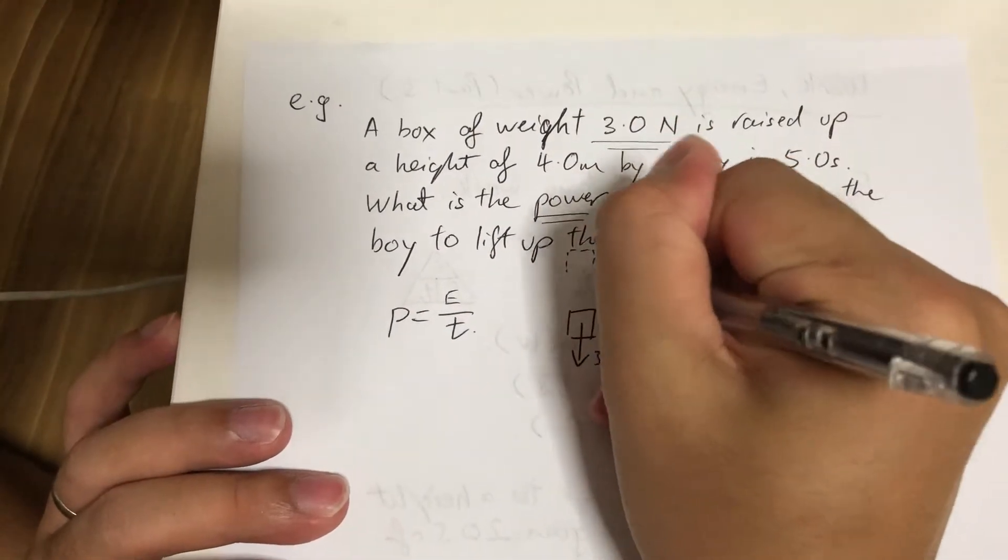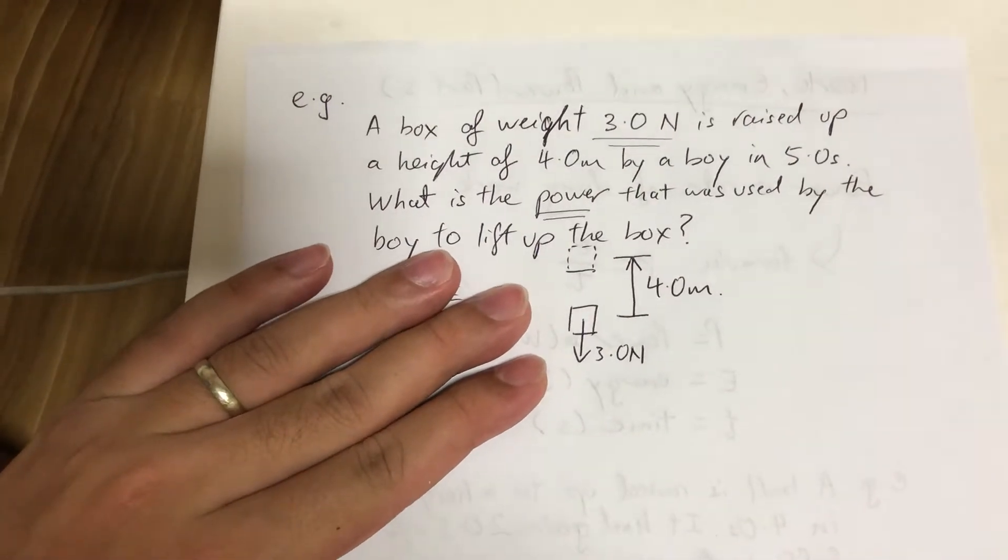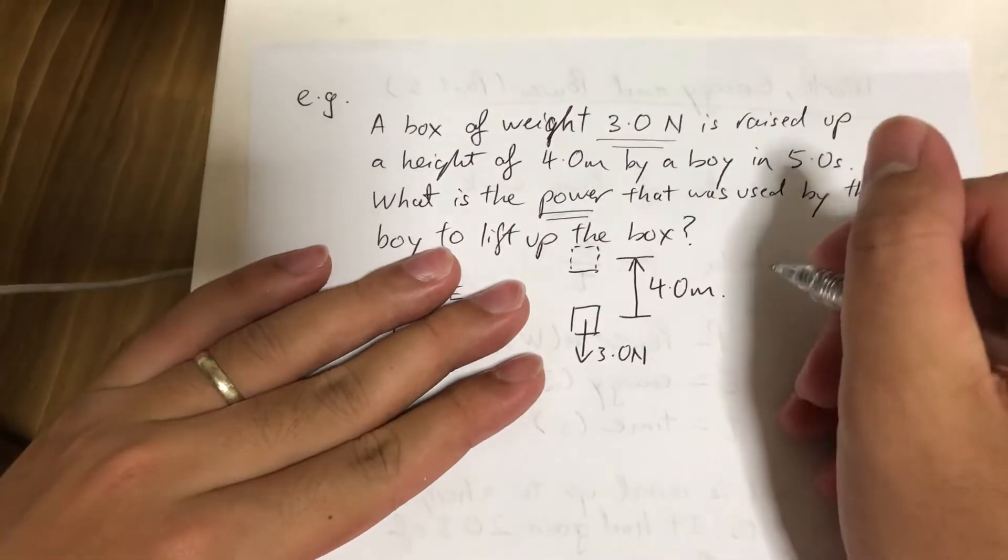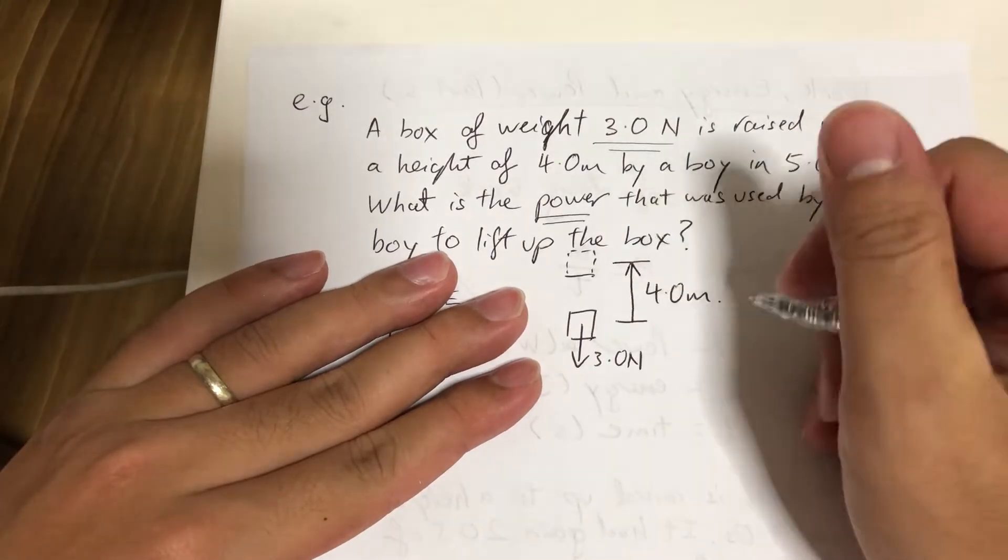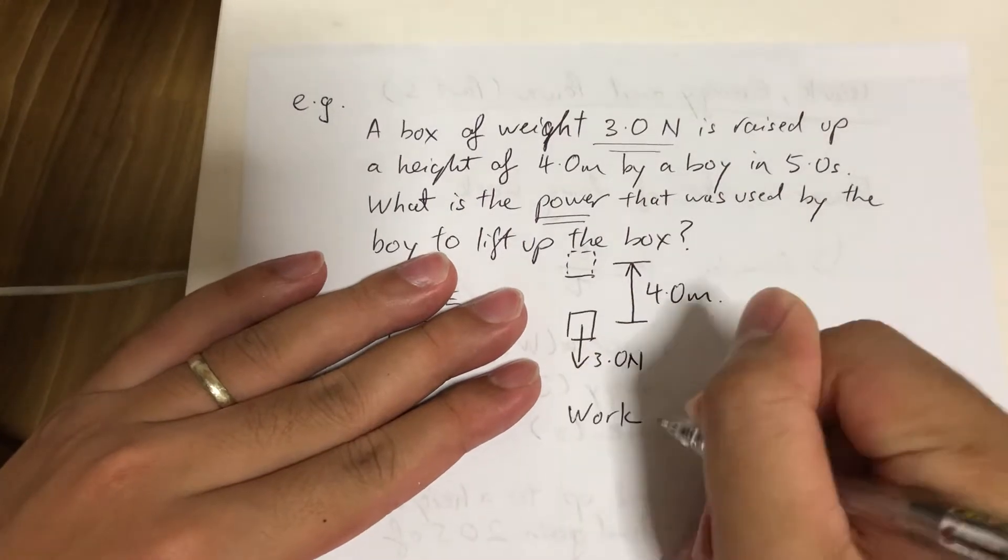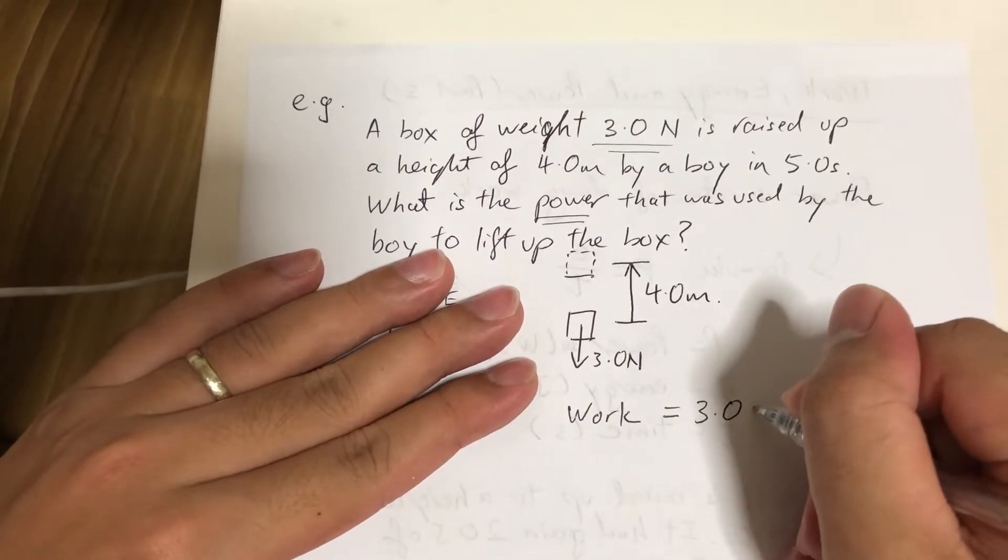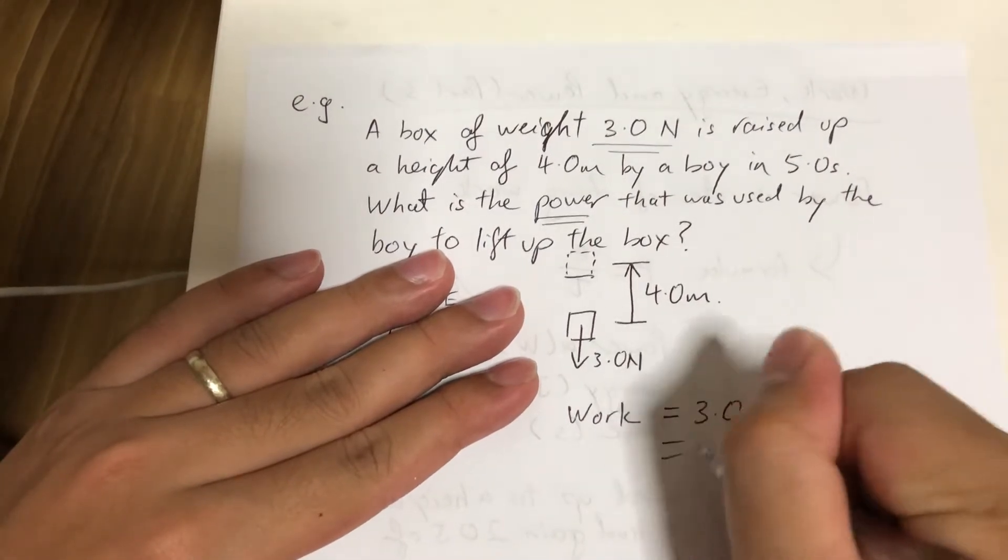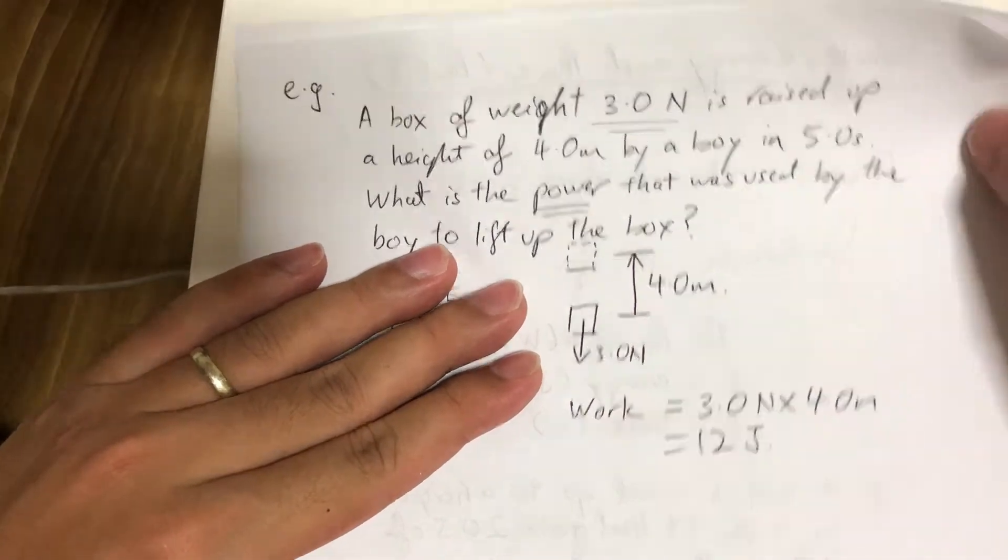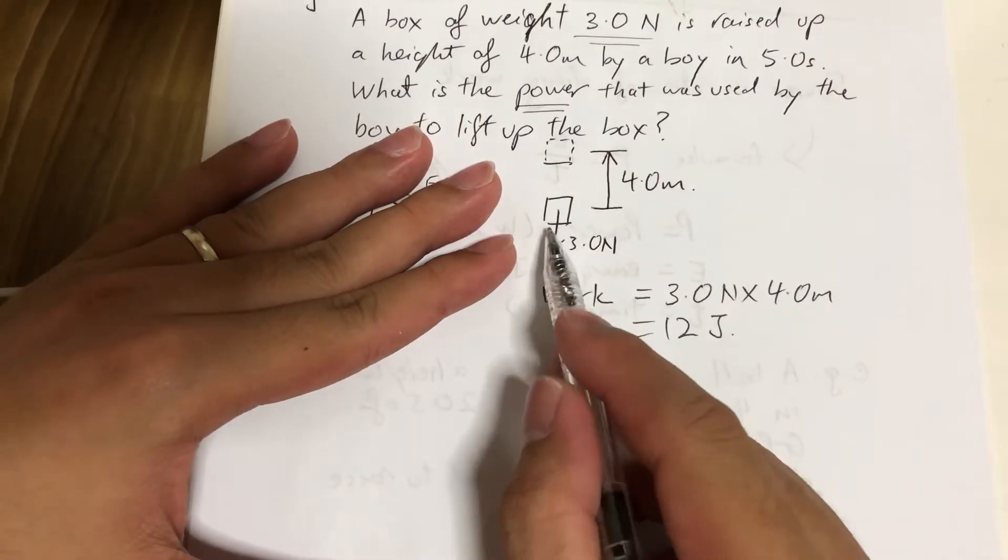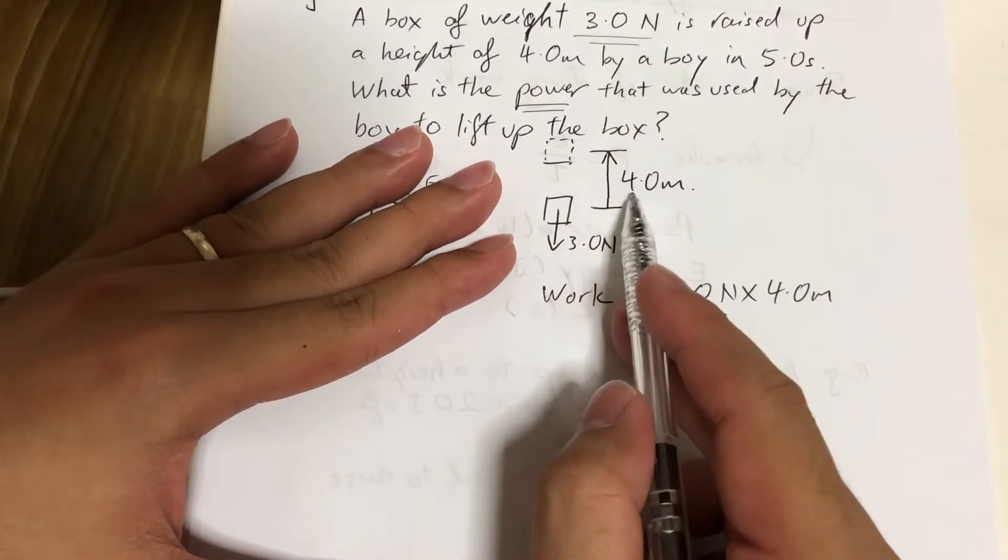Now if you look carefully at this portion - a box of weight 3 newtons is raised up a height of 4 meters - look at this diagram very carefully. Does this look like something you've learned before? That's right, this diagram looks like work done. From this diagram we know the box requires 12 joules of work to lift up the height of 4 meters. The force is actually parallel to the height - the weight of 3 newtons is parallel to the height of 4 meters.